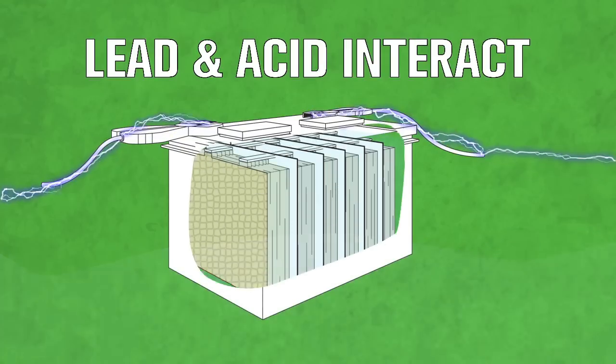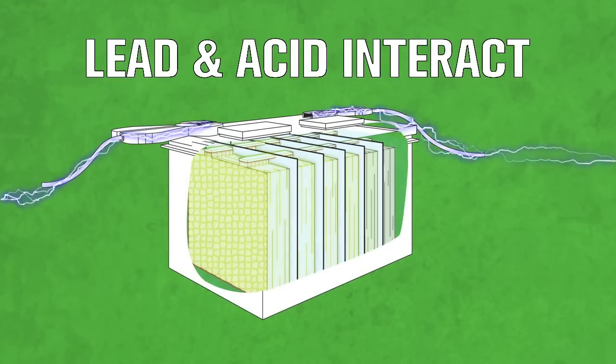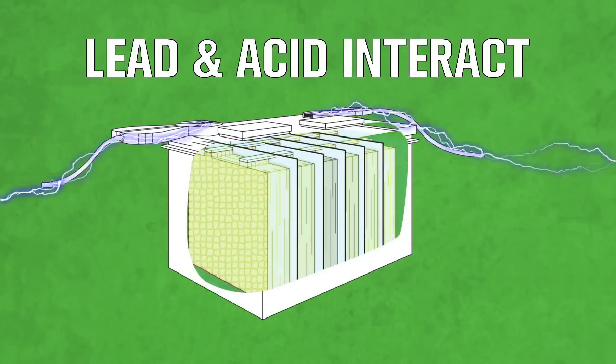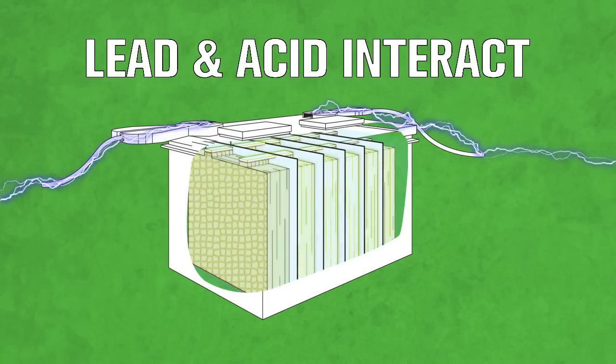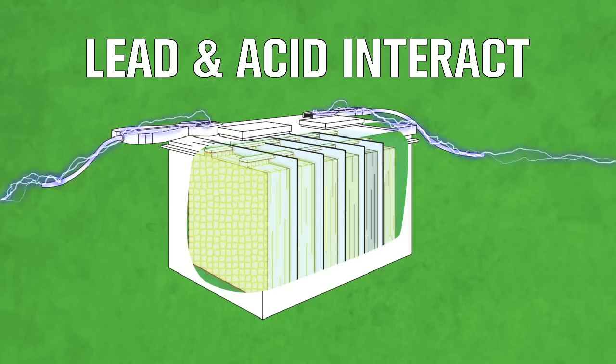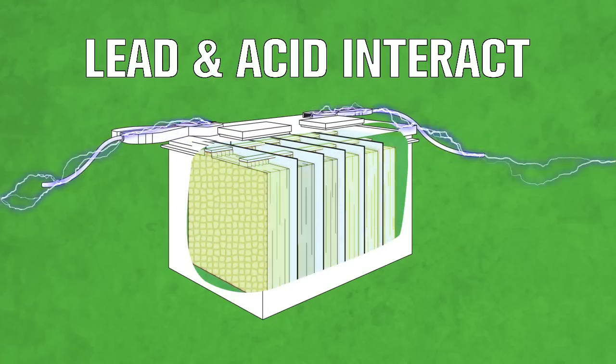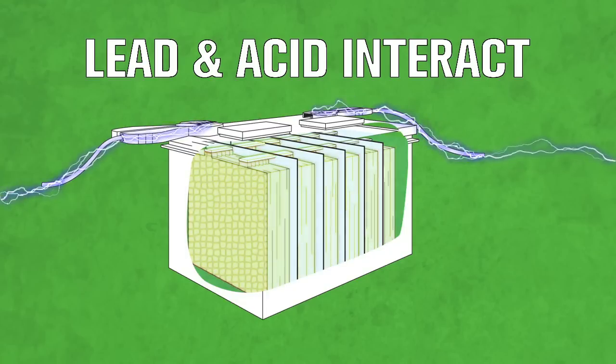Inside, the interaction between the lead and acid creates the chemical structure with electrical potential. The acid helps conduct the electricity inside the battery, and the lead skeleton directs the electricity to the battery posts.